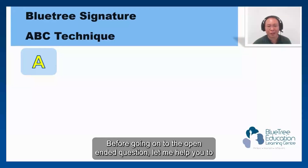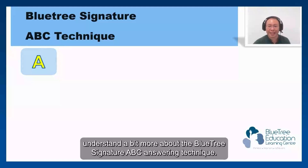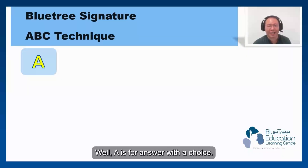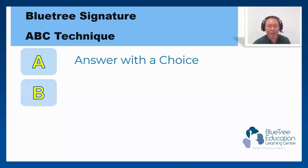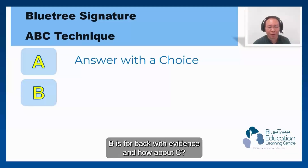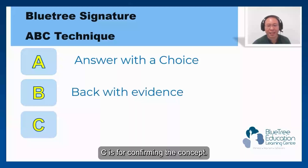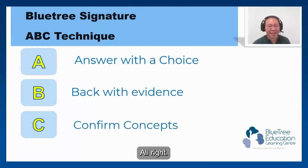Before going on to the open-ended question, let me help you understand a bit more about the Blue Tree Signature ABC answering technique. What does ABC stand for? A is for 'Answer with a choice.' B is for 'Back with evidence.' And C is for 'Confirming the concept.'